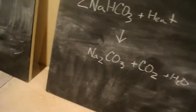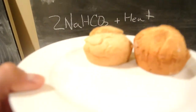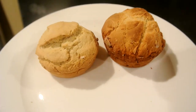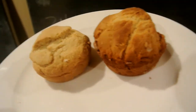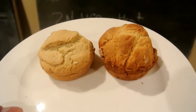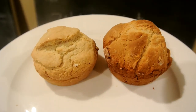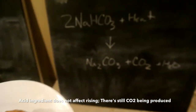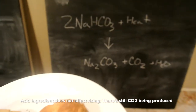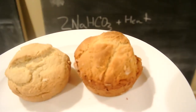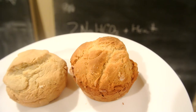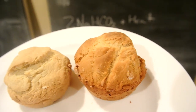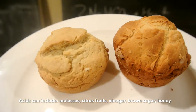Here I have two muffins. You can note the color — the one on the right is a lot darker than the one on the left. This is because the one on the left does not have the acid ingredient buttermilk. Baking soda has a bitter, soapy taste, and when you don't add an acid to mask that bitter flavor, you get a product that doesn't taste as good.